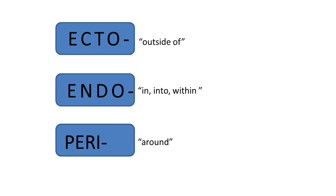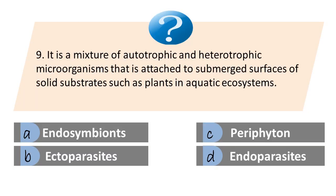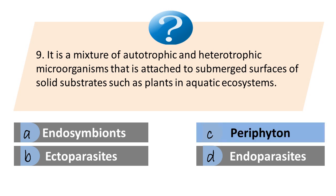The prefix ecto means outside of. Endo means in, into, or within. Peri means around. Question: It is the mixture of autotrophic and heterotrophic microorganisms attached to submerged surfaces of solid substrates, such as plants in aquatic ecosystems. A. Endosymbionts. B. Ectoparasites. C. Periphyton. D. Endoparasites. The answer is C. Periphyton.